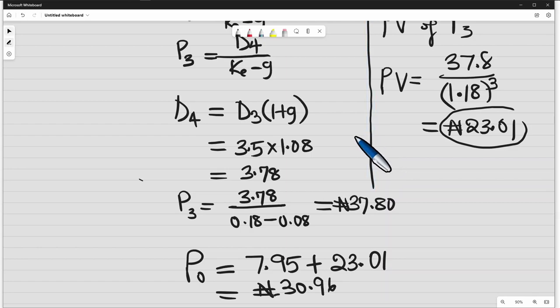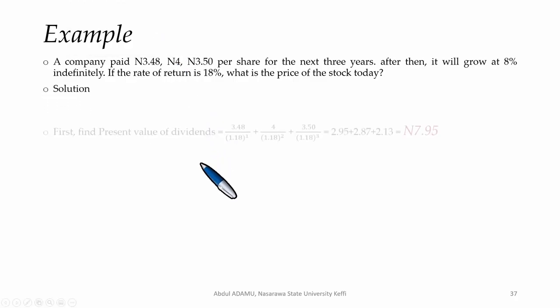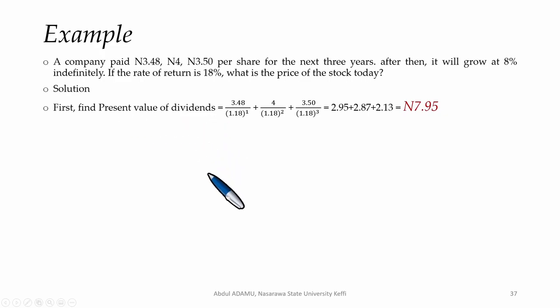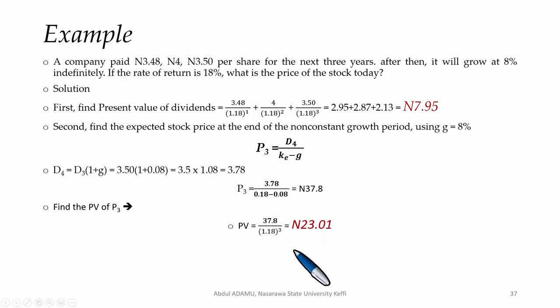So this is how we find non-constant growth in the first stage. The solution is explained here. First we find the present value of the dividends. This is the value we got. Then the expected stock price at the end of the non-constant period using the 8%. So this is the modified Gordon growth model. So this is the D4. If we put it, we have 37 Naira 80 kobo. We find the present value of this price. We have 23 Naira 1 kobo. We add this to this. So we have 30 Naira 96 kobo.